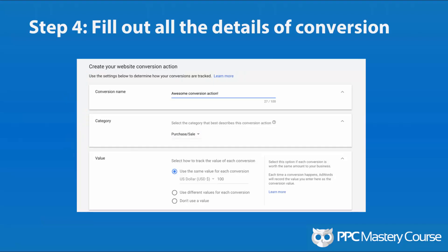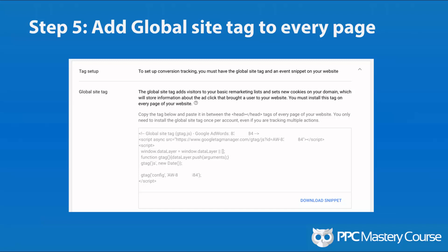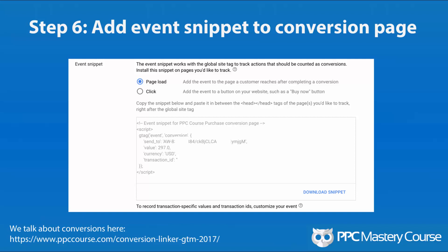Step four: you fill out the data and details of your conversion. You give it a name, a category, and a value. Make sure the value is rooted in reality as to the benefits you get for each lead or conversion that comes in. Step five: you're going to add this global site tag to every page of your website. If you've been in AdWords for a while, you'll notice this has changed — it used to be one conversion tag only on your thank-you page or success page, but now Google wants you to put this on every page of your website. Step six: you're going to add an event snippet to your conversion page. Whenever a conversion happens, you can choose on page load if they view the page, or if somebody clicks a buy-now button, you can choose that as your conversion point. You put those two pieces of code on your site — one is global, the other is local, meaning it only goes on your conversion pages — and you will start to track things.